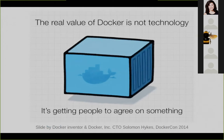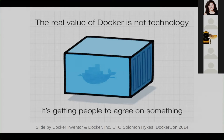This is a slide I borrowed from the inventor of Docker, Solomon Hykes, who said: 'The real value of Docker is not the technology, it's getting people to agree on something.' This means the developer and the server administrator agree on the Docker container as one thing they can both understand and work with. In a similar way, more and more researchers say the container is the one thing that both the researcher and their readers can agree on.